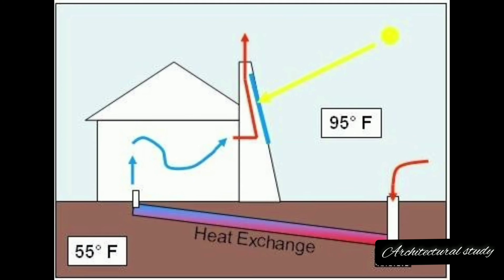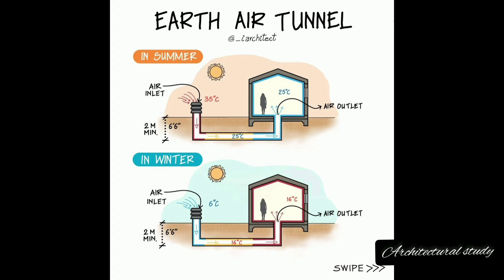In conclusion, Earth-Air Tunnels (EATS) offer a sustainable alternative to traditional HVAC systems, enhancing energy efficiency and reducing environmental impact. Despite initial costs and limitations, their long-term benefits make them a viable choice for conscientious construction projects.